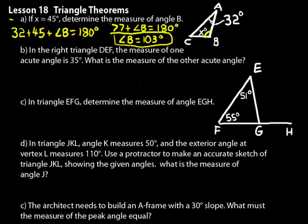Now problem B, in that right triangle DEF, I don't have one shown, but just imagine a right triangle that's called DEF. The measure of one of the acute angles is 35 degrees. What is the measure of the other acute angle? Well, let's just think about it. It's a right triangle. So we know two of the three angles.